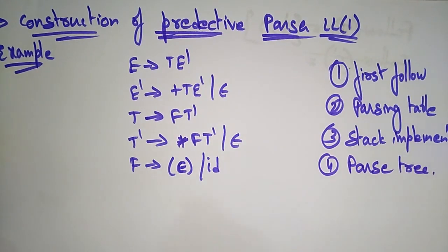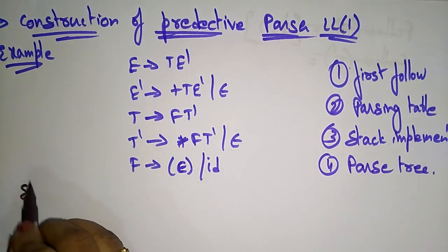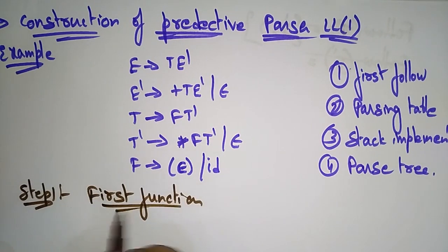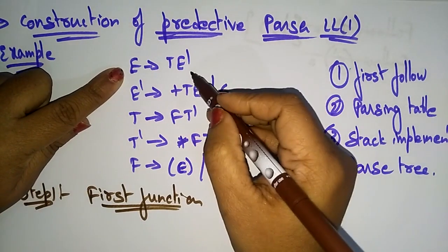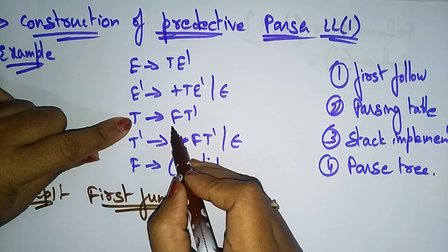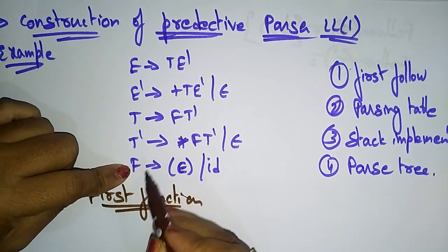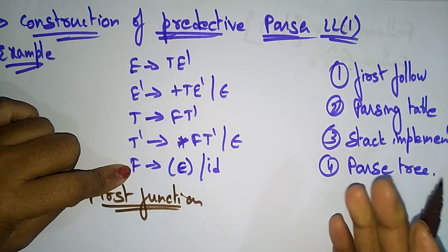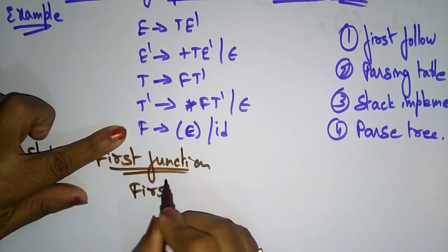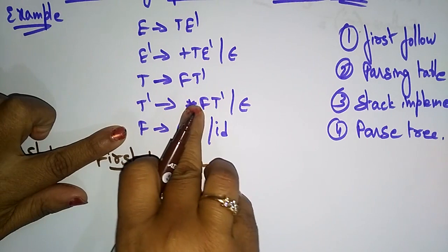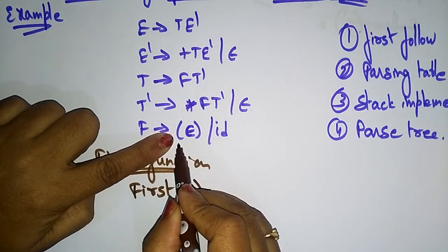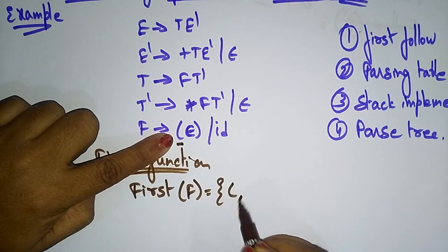These are the steps to follow. Now let's see step one: finding the First and Follow functions. The First of E is T E-dash, but T is a non-terminal, so go to T. The First of T is F, and F is a non-terminal, so go to F. The First of F is left-parenthesis and id. So whatever non-terminals are present in First, take those terminals from F. First of F is left-parenthesis and id.